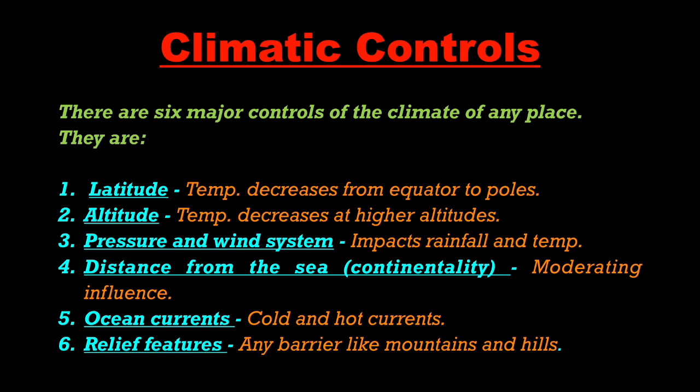Fifth are Ocean Currents — there are two types: cold and warm currents — and they also impact the climate of a region. Finally, Relief Features such as mountains and hills act as barriers and also impact the climate of that region.